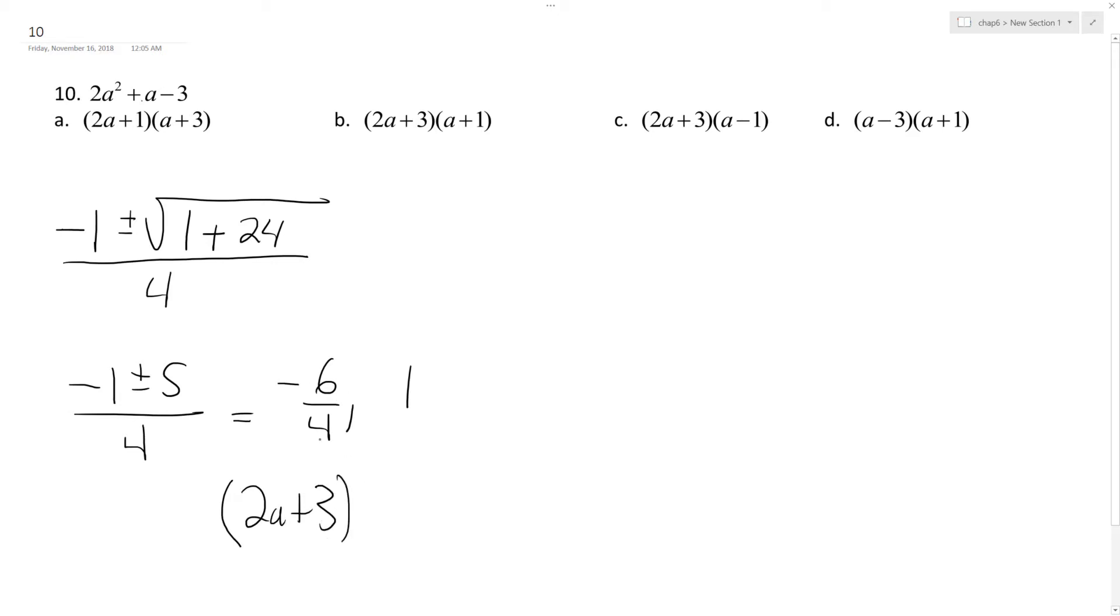6 over 4 reduces down to 3 halves, so think of the simplest terms you can when you do that. And then we'll have an A minus 1, because it's the opposite of whatever the root is.